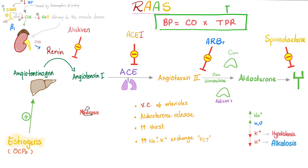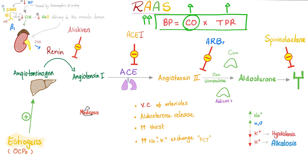Remember that arterial blood pressure equals cardiac output times total peripheral resistance. When you constrict vessels, you decrease the radius and increase the resistance, raising blood pressure. When you reabsorb salt and water, you increase extracellular fluid volume. So renin has one purpose in life — to raise your blood pressure. Therefore, what's the main stimulus for renin release? Low blood pressure. Hypotension will stimulate renin release.